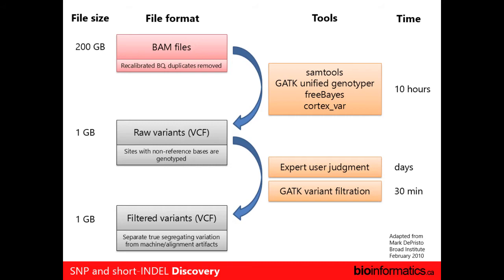Those raw variants aren't good enough. At the Broad, it might take days for an expert to go over the dataset and figure out which ones are good. You could use things like the GATK variant filters, which only take about 30 minutes to process — and that's what we'll be doing today. At the end of the day, you end up with about one gigabyte of filtered variants if you're doing a whole genome sequencing approach. You'd expect between three to four million SNPs in a human individual after you've done that.